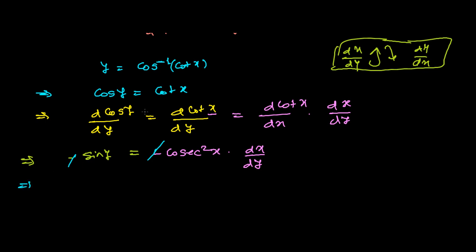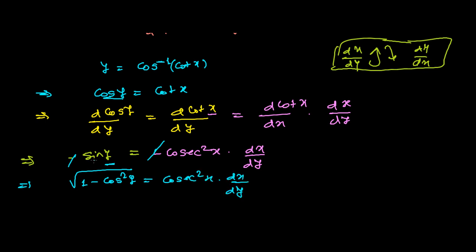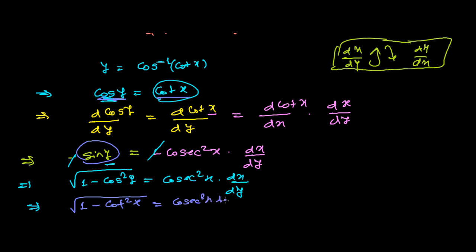Now we have sin y and cosec²x, but we need everything in terms of x. We use the identity sin y equals the square root of 1 minus cos²y. Since we know cos y equals cot x, we substitute: sin y becomes the square root of 1 minus cot²x. So the equation becomes: square root of 1 minus cot²x equals cosec²x times dx/dy.